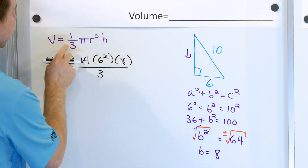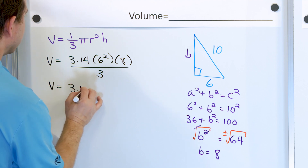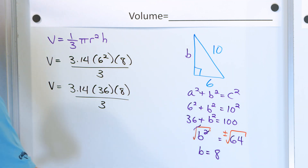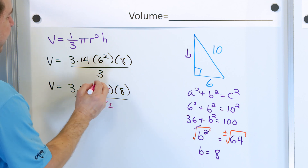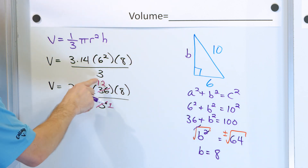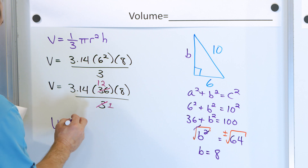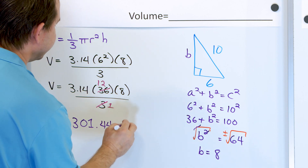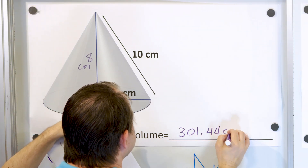All of this is divided by 3 because multiplying by a third is the same as dividing by 3. The volume is 3.14, then 6 times 6 is 36, times 8, dividing by 3. We notice we have a 36 and a 3 — we can pre-simplify: 3 divided by 3 is 1, and 36 divided by 3 is 12. So we take 12 times 8 times 3.14, and you get 301.44 cubic centimeters.